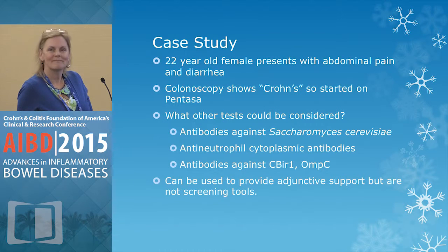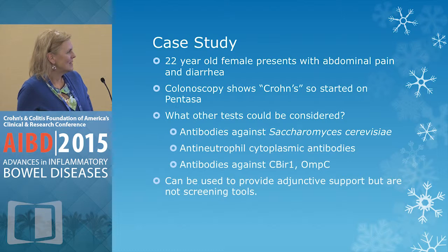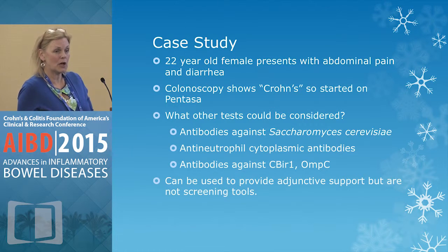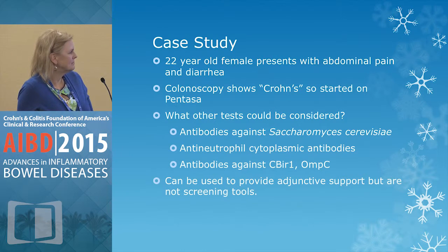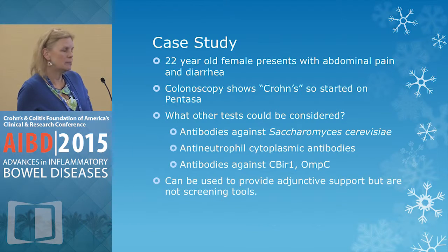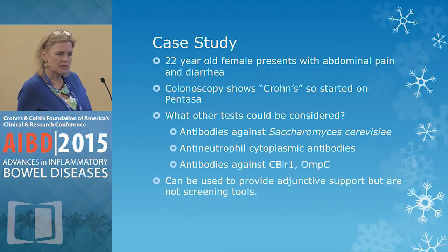Important considerations include fecal calprotectin — which we didn't have back then — as well as psychosocial history, which is sometimes forgotten but absolutely important. In terms of specific testing, we'd look at the IBD panel: antibodies to Saccharomyces cerevisiae (ASCA), pANCA, and antibodies to CBir1 and OmpC. These are adjunctive tools — not screening tools — but they can sometimes help sort out the difference between ulcerative colitis and Crohn's.